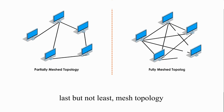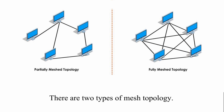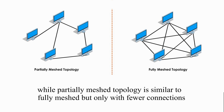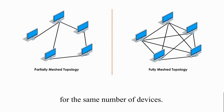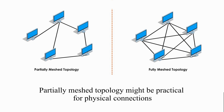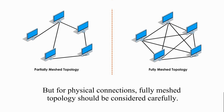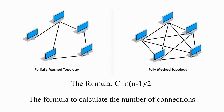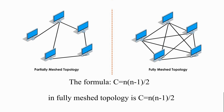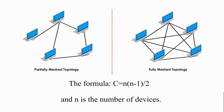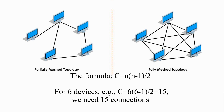Last but not least, mesh topology. There are two types: fully meshed topology means every node connects to every other node, while partially meshed topology is similar but with fewer connections for the same number of devices. Partially meshed topology may be practical for physical connections, while fully meshed is practical in wireless networks. The formula to calculate the number of connections in fully meshed topology is C = n(n−1)/2, where C is the number of connections and n is the number of devices. For 6 devices, for example, we need 15 connections.